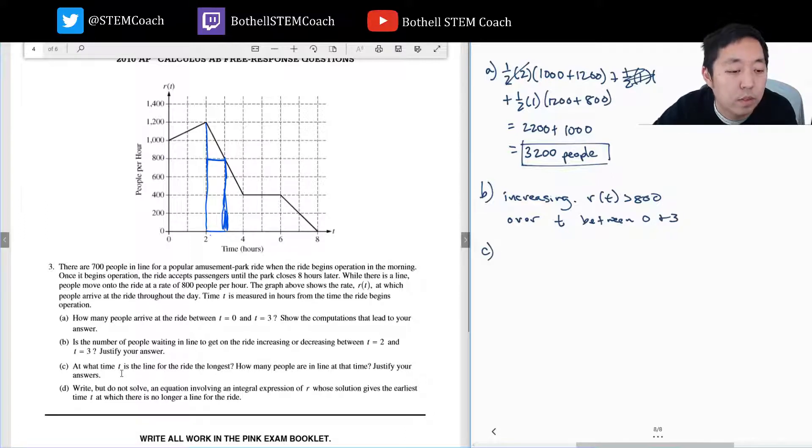At what time T is the line for the ride the longest? How many people in line are at that time? Right when it hits eight hundred is when it would be the longest. So you could think of it as the equation, as like, how many people are in line at a given time.